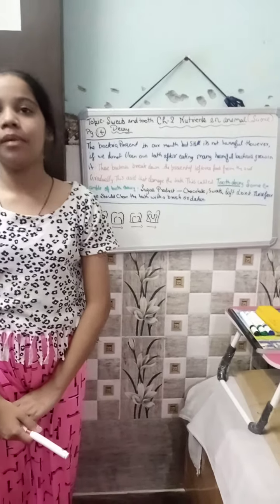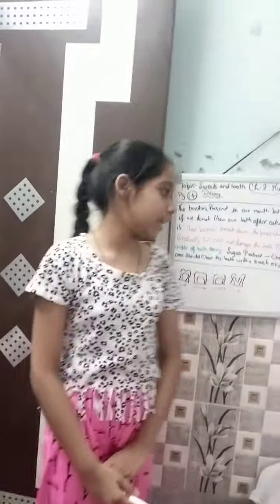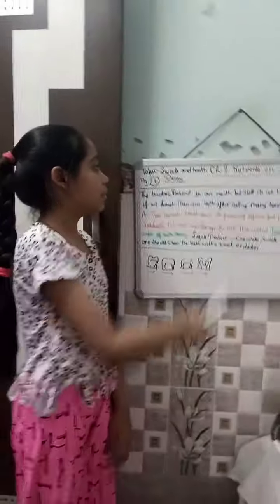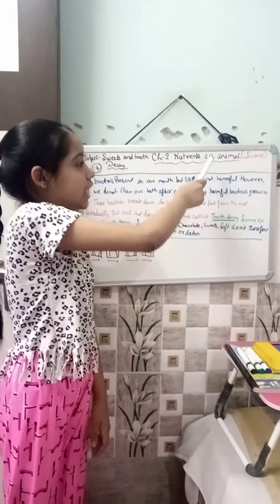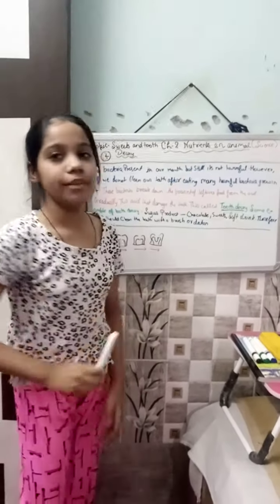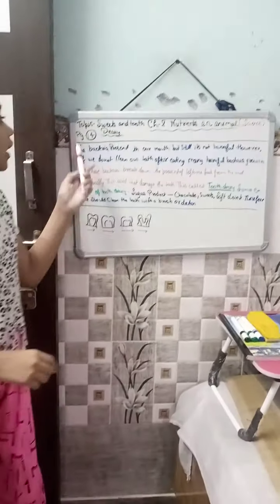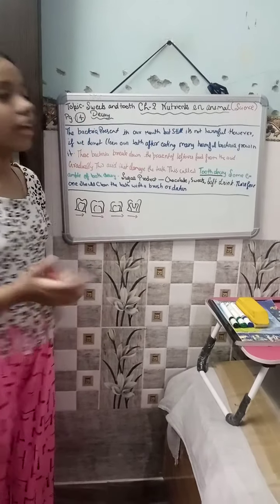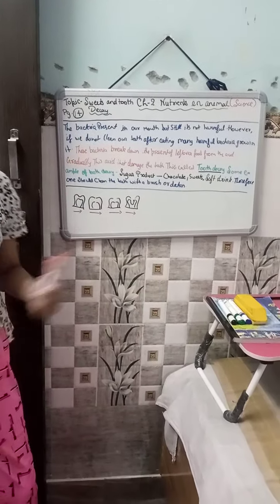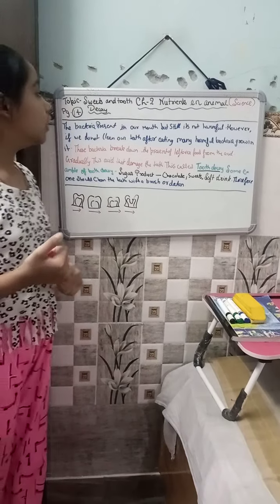Hi everyone, my name is Adhika Gupta from class 7. Today I explain chapter 2, Nutrition in Animals from the science subject, on page number 14, and the topic is sweets and tooth decay. So let's start.